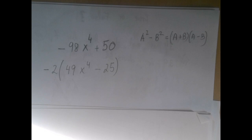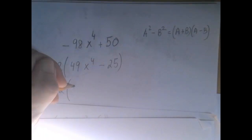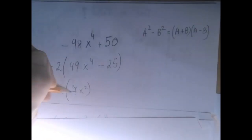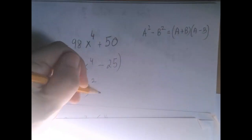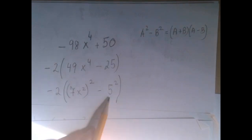If this is new to you, here is what we can do. What was squared here? To get 49, we have to square 7. To get x to the fourth, we have to square x squared. So 7x squared squared is this 49x to the fourth. And this is 5 squared. So we have a square minus another square.